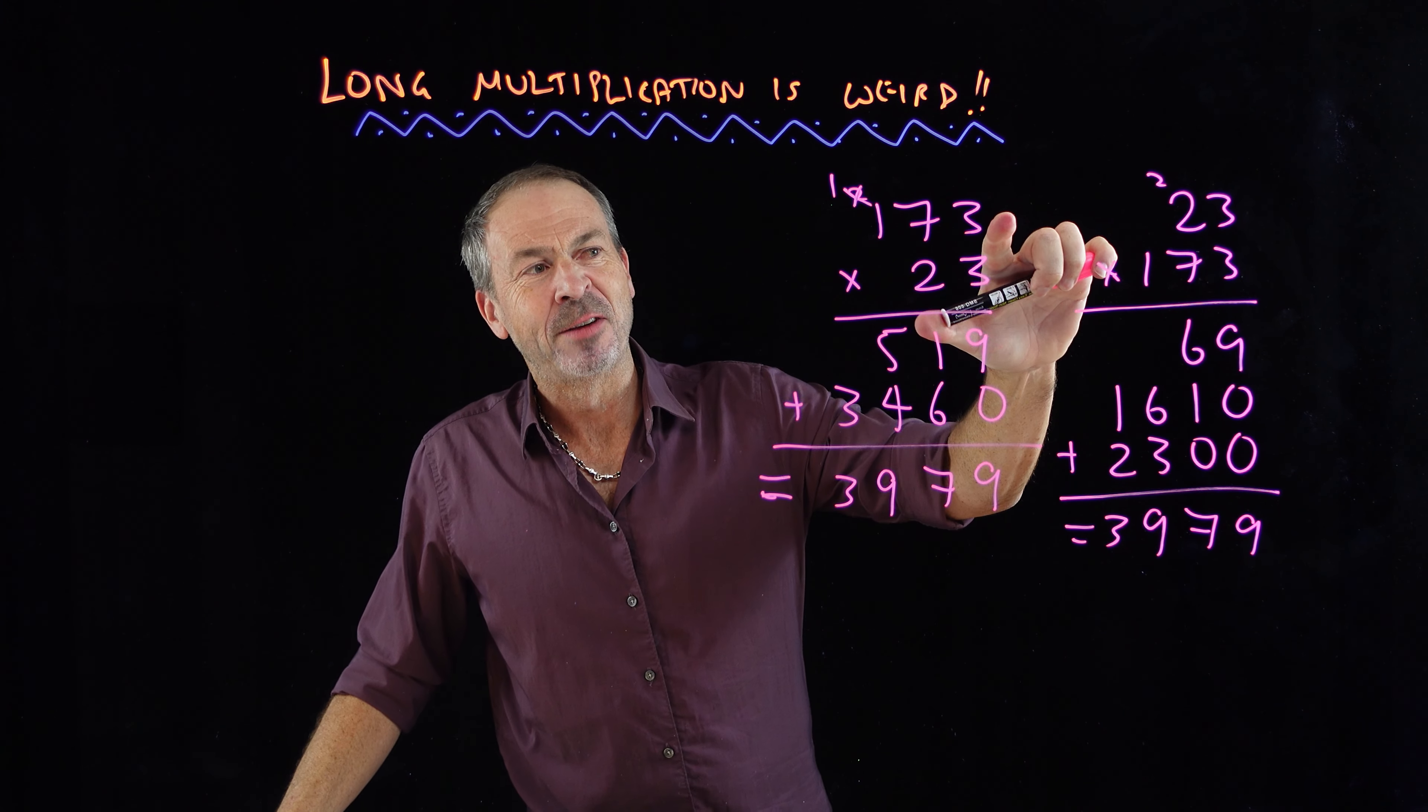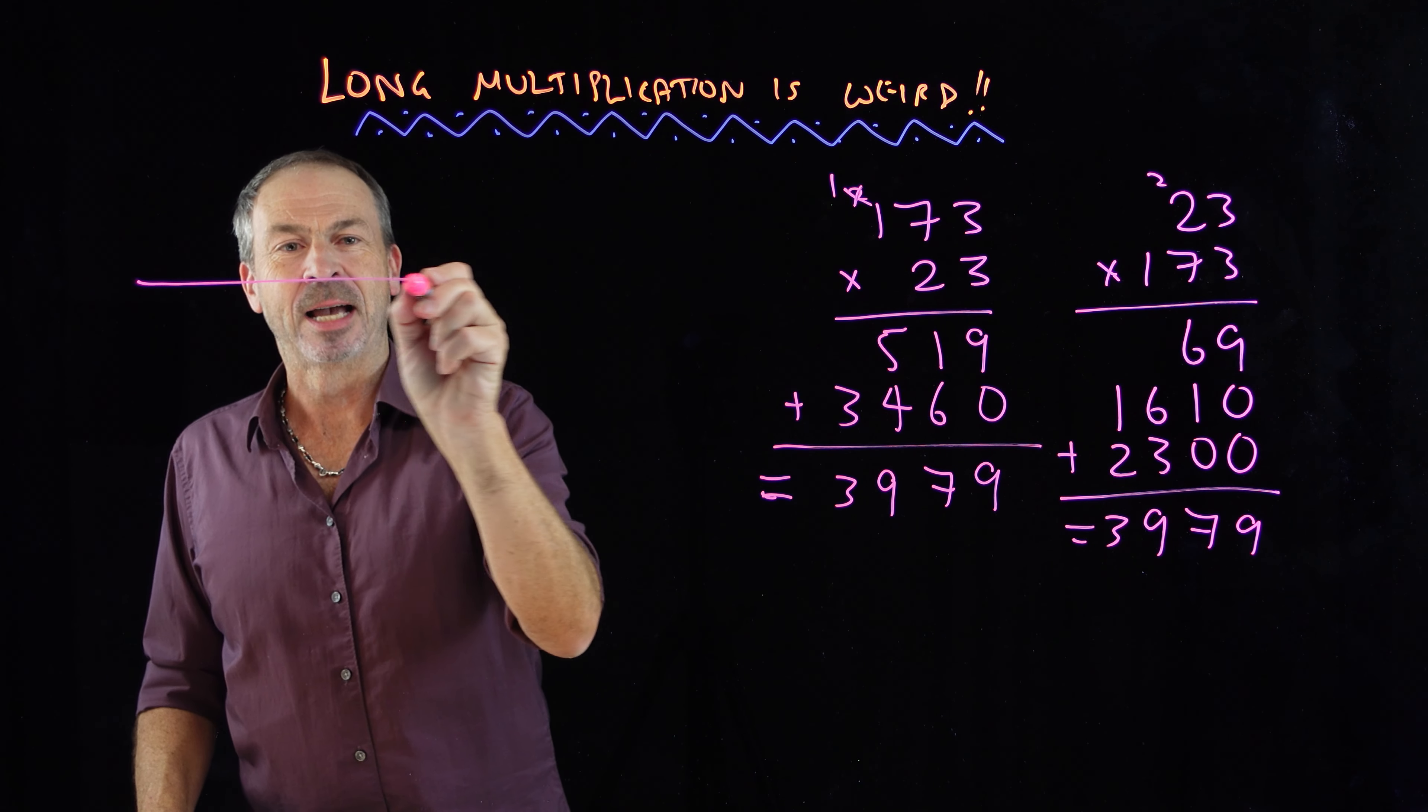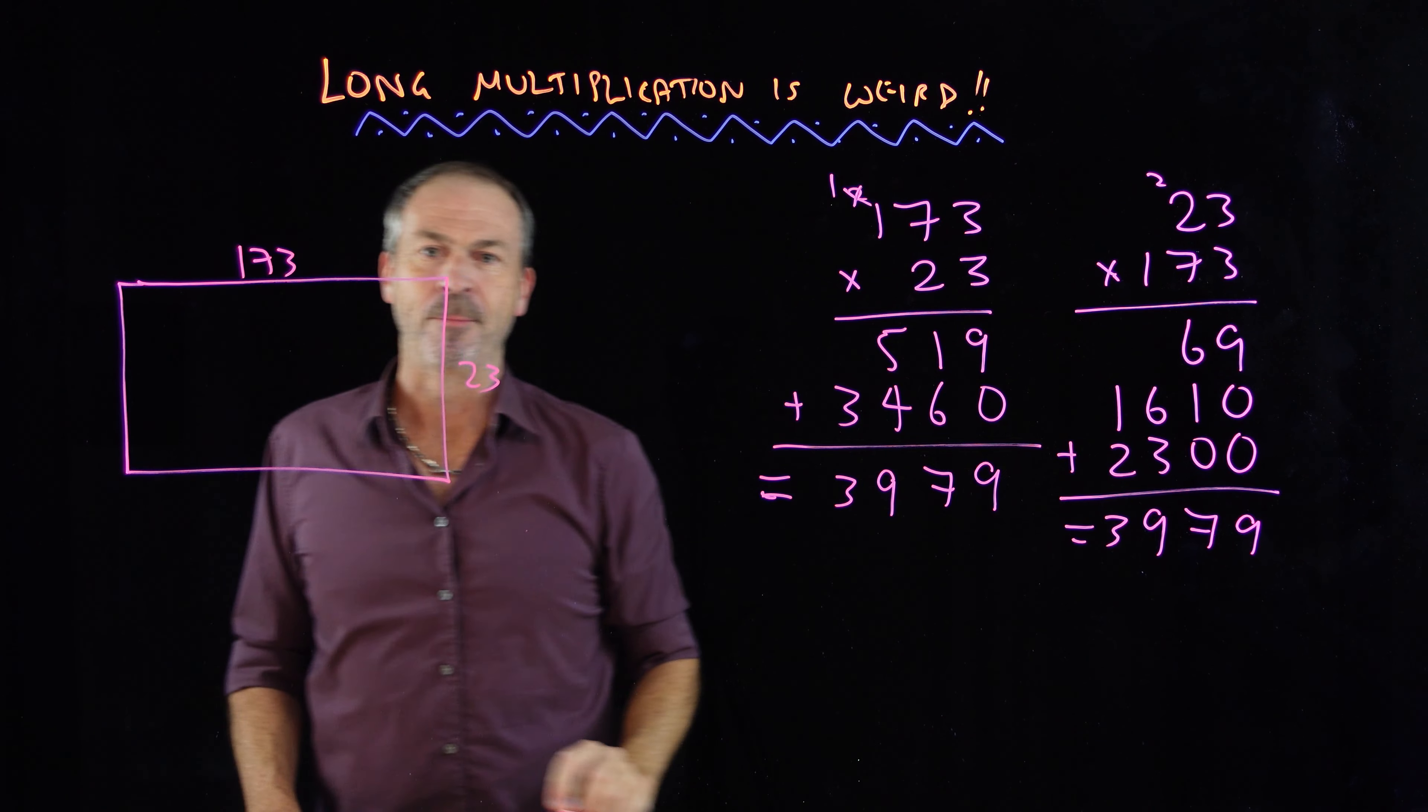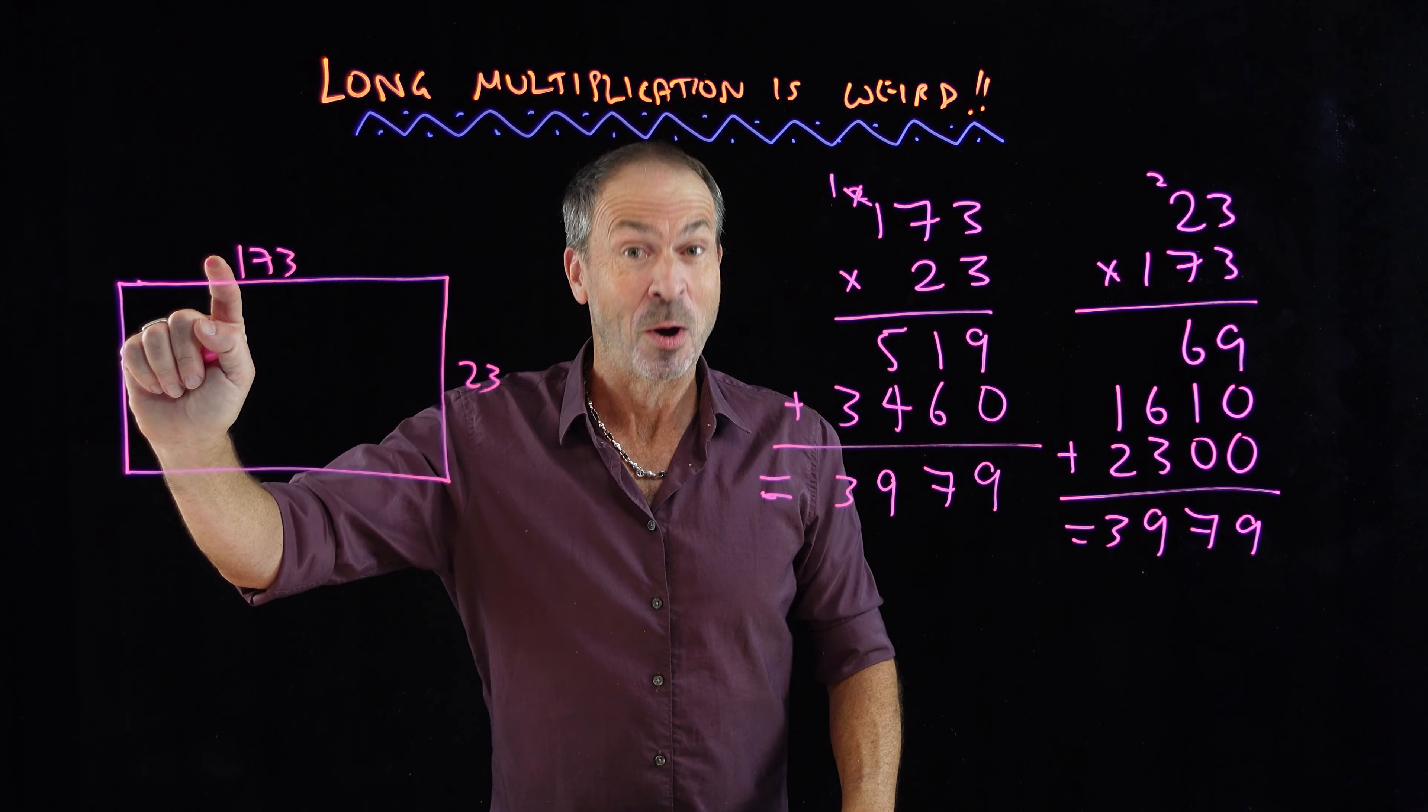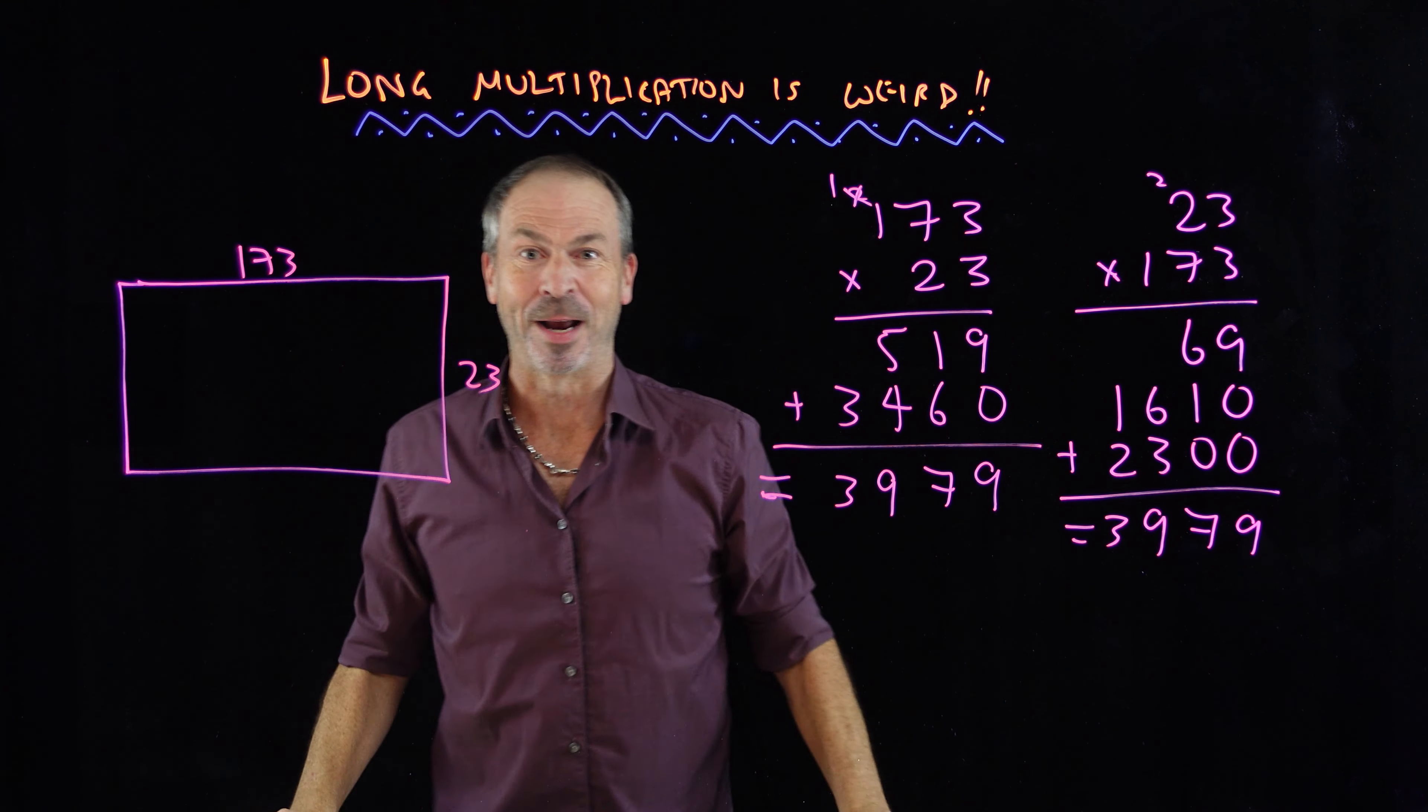Okay, so we're working out 173 times 23. To me, that's really part of a geometry problem. Imagine I was given a rectangle that's 173 units long and 23 units wide. What is the area of that rectangle? Well, to work out the area of that rectangle, I'd have to multiply 173 times 23, length times width. So this computation is working at the area of that rectangle.